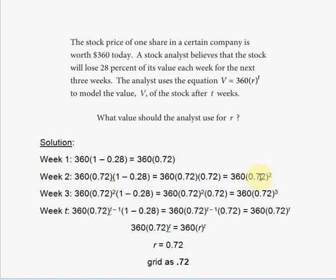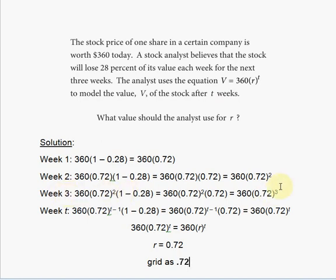For week three, the current value is 360 times 0.72 squared, and we take 28% off of that by the third week because it keeps losing 28% of the current value. So we subtract 28% one more time, giving us 360 times 0.72 squared times 0.72, which means 0.72 is raised to the cubic power — three instances of 0.72 in a product. So 360 multiplies 0.72 raised to the power of 3. This tendency — the week number matching the power number — remains consistent.